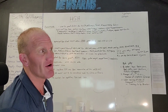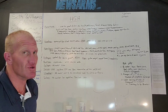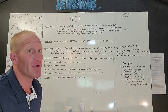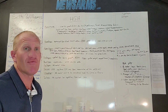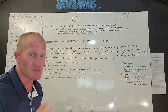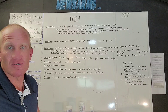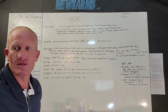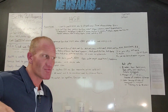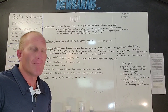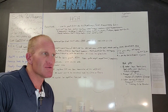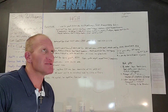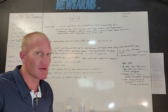HGH is human growth hormone. Human growth hormone is a 191-chain amino acid peptide. It has massive benefits throughout the body. It's what we know as a master hormone, which basically means it's a hormone that controls other hormones — it literally keeps everything in balance.